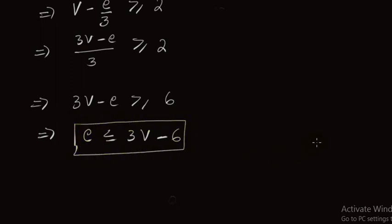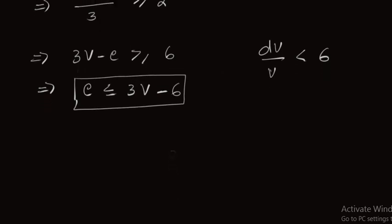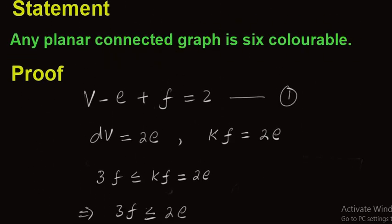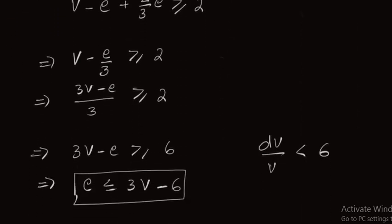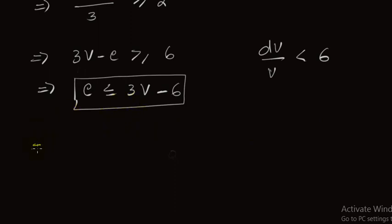Our main focus is to prove that the average degree — that is, the sum of dv divided by v — is less than 6. If we succeed in proving this, our result will be proved. From here, multiplying both sides by 2, we have 2e is less than or equal to 6v minus 12.